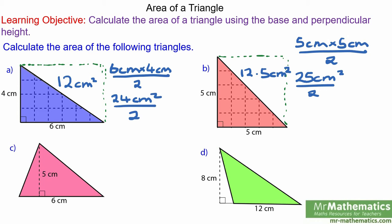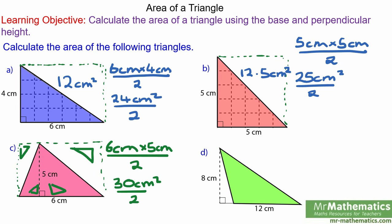For question C we can still make it into a rectangle. You can see this triangle is the same as this triangle, and this triangle is the same as this triangle. So the large pink scalene triangle is half the area of the rectangle which is 6cm by 5cm divided by 2. So 30cm² divided by 2 gives you 15cm².